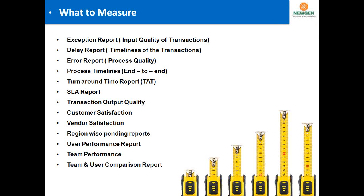An important question is what to measure. Every department and organization has reporting needs. The top reports include: exception reports, delay reports, error reports, process timelines, turnaround time, SLAs, transaction output quality, customer satisfaction, vendor satisfaction, region and body spending reports, user performance, team performance, and team performance comparisons. These are consistently the top reports requested across the global organizations I have seen.